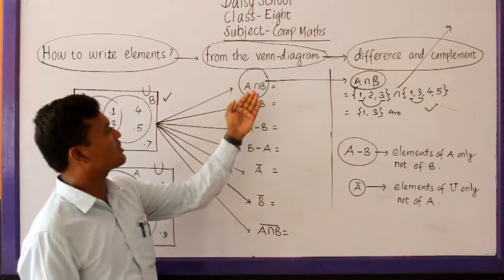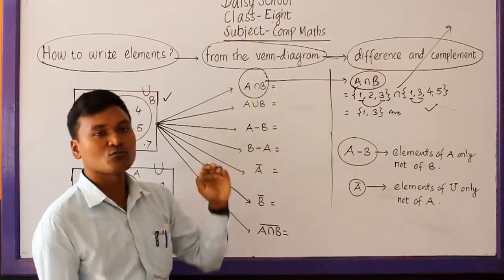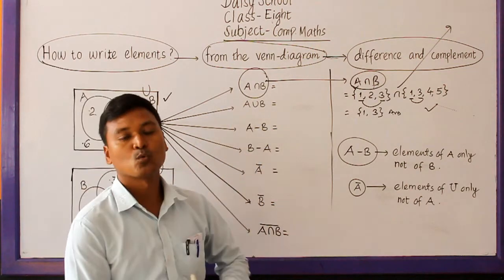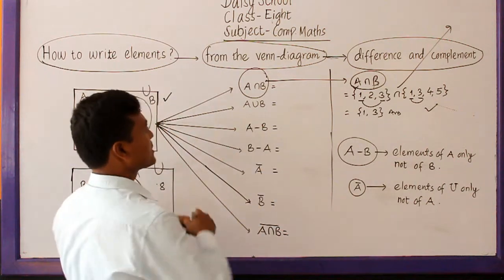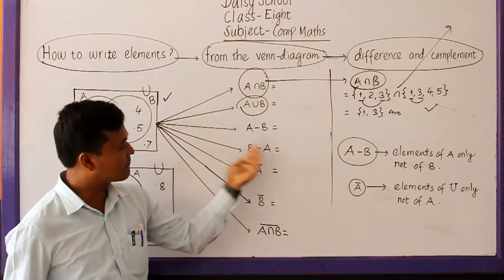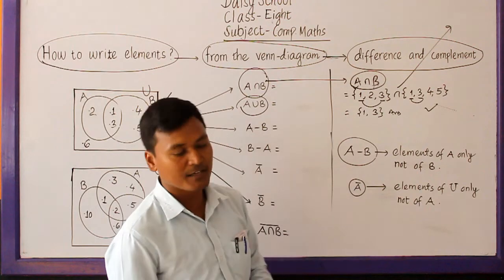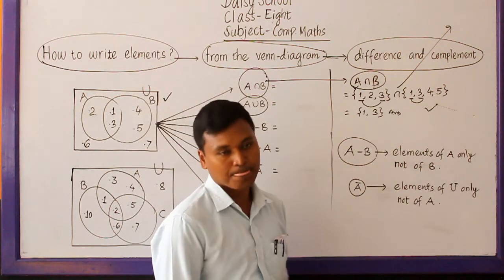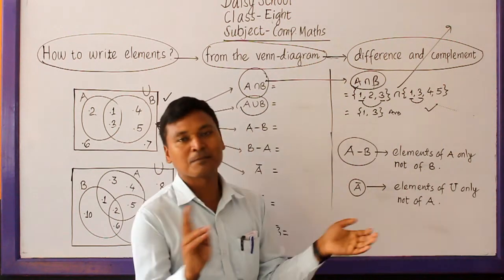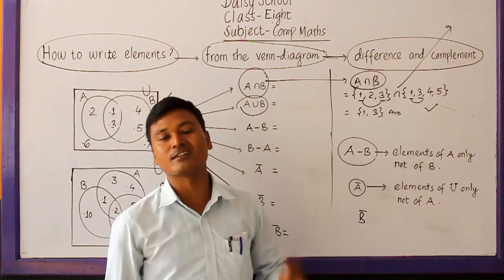Let us start. Intersection and union we read already in previous classes. While finding intersection, we just write common elements. While finding union, we write all the elements of A and B, without repeating. But while writing the elements related to set difference and complement — A difference B means elements of A only, not of B. While finding A complement, we write elements of U, the universal set, only, not of A.